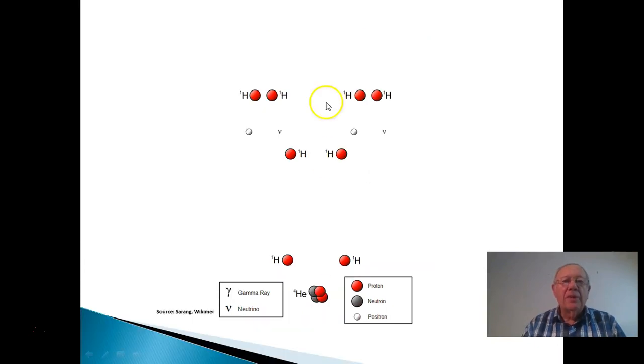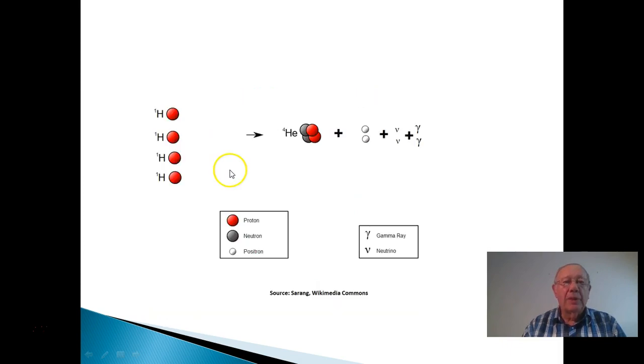In the overall process, we've got these four hydrogens involved, along with these two here, and our products are those two hydrogens plus the helium. So the net overall reaction is this: four hydrogens producing helium and two positrons, two neutrinos, and two gamma rays. So that's the overall process that occurs.